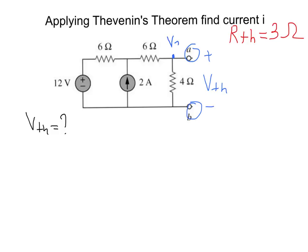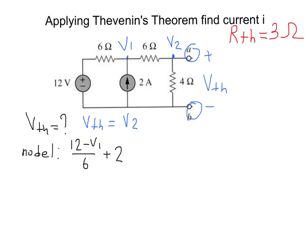That voltage is the same as the voltage on the upper node — let's call it V2. Looking at the circuit, we have two nodes, so we'll use nodal analysis to find V2. Let's name the first node V1 and the second node V2. V Thevenin equals V2. For node 1: the first current comes in from 12 volts, giving (12 minus V1) over 6, plus 2 amps coming in, minus (V1 minus V2) over 6, equals zero.